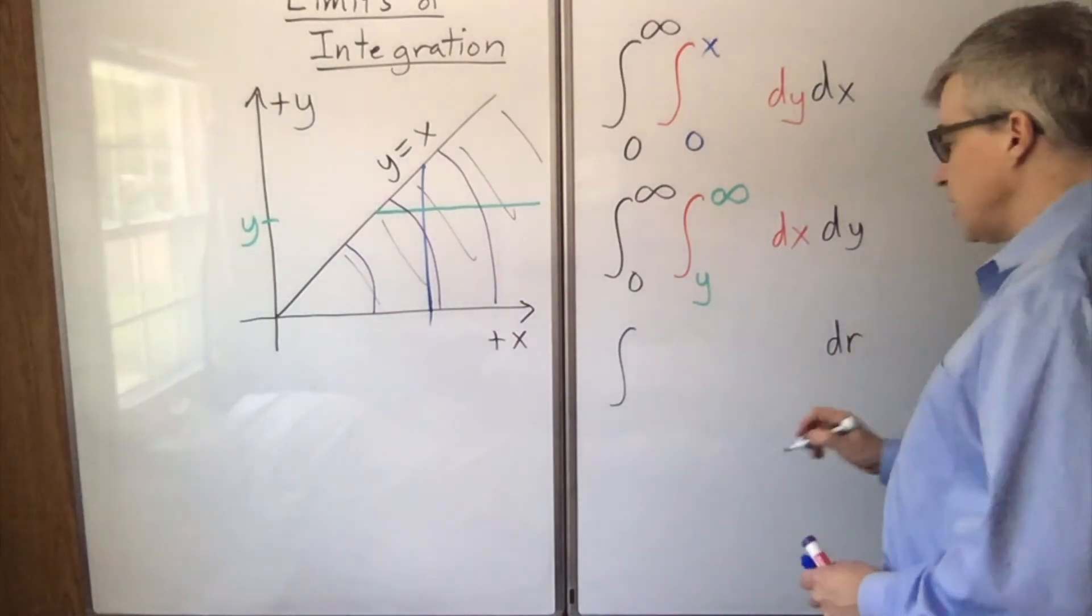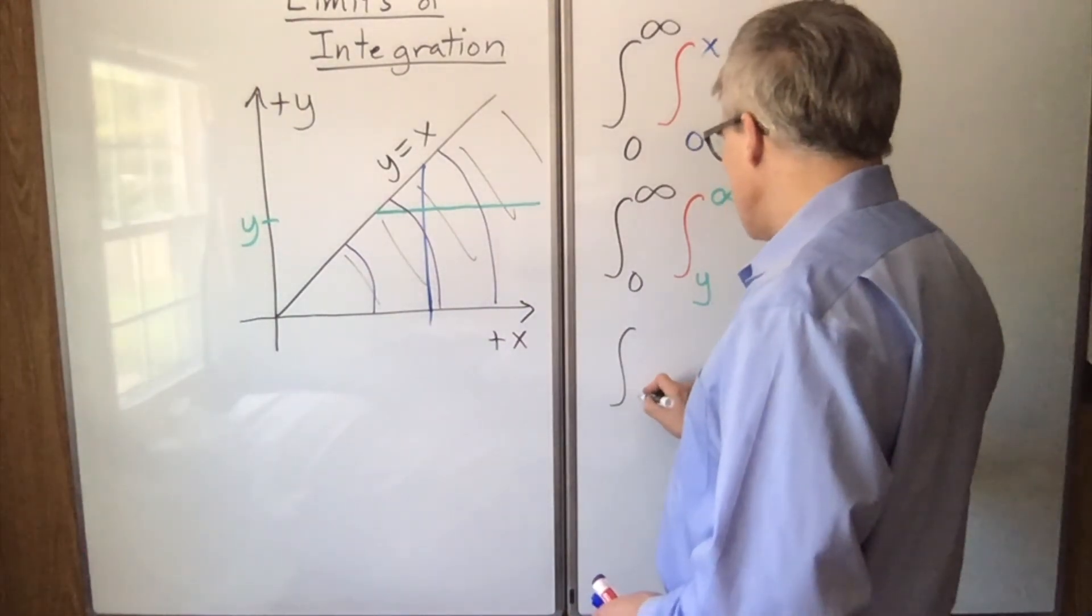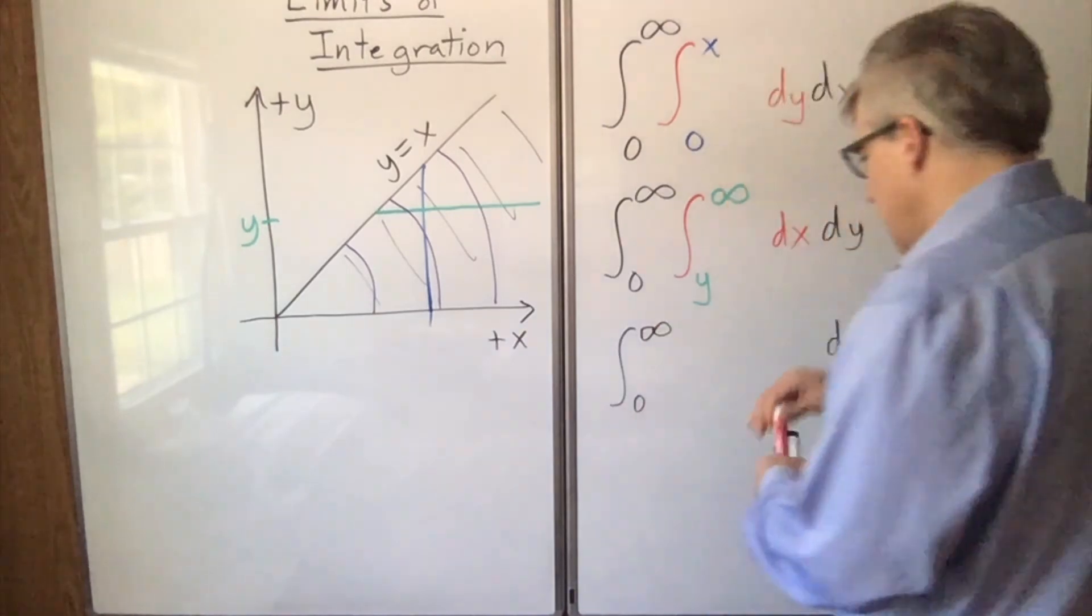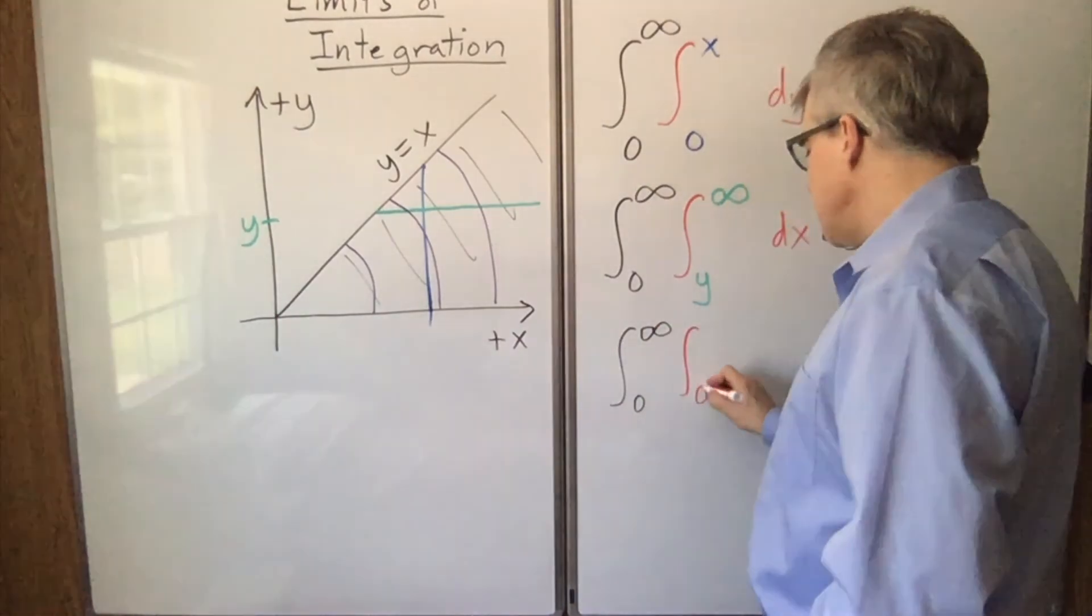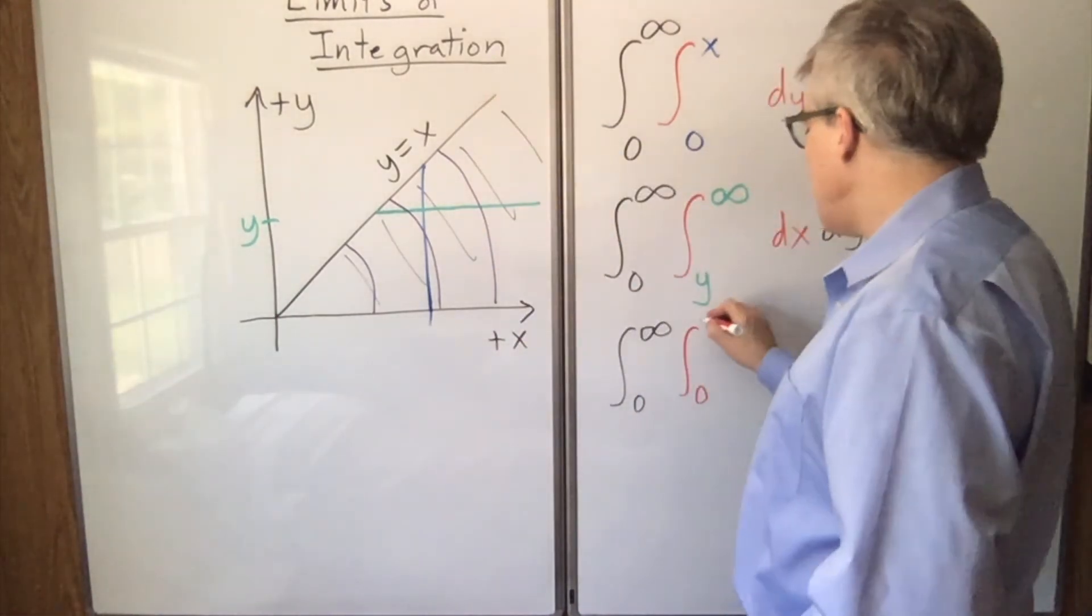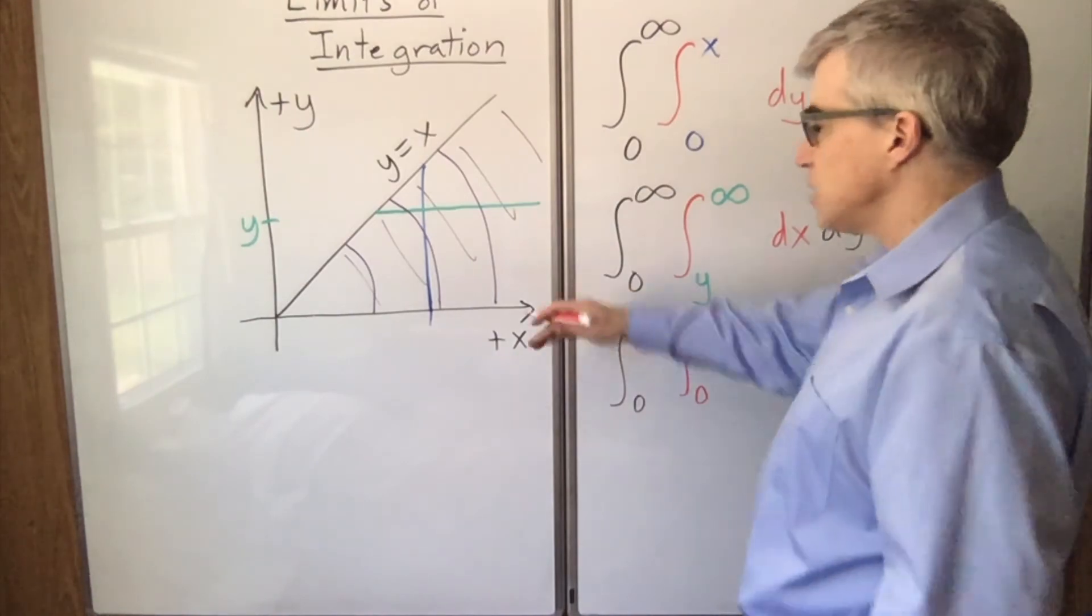So if we have dr on the outside, then r is going to go from 0 to infinity. And theta is going to run from 0 to pi over 4 because that's 45 degrees.